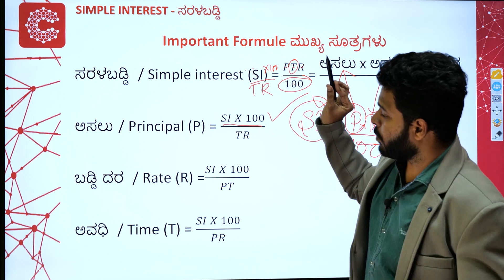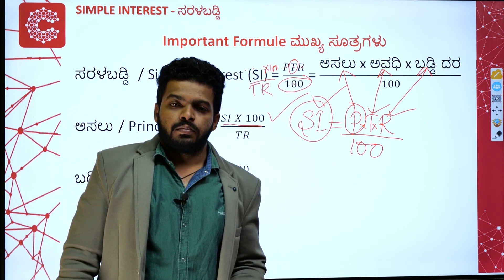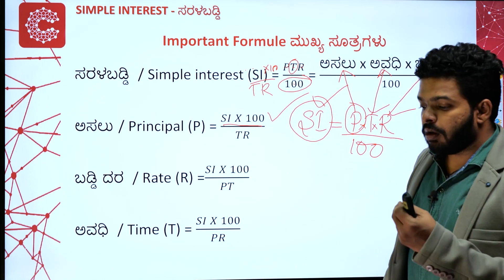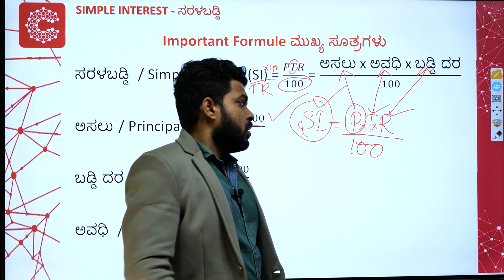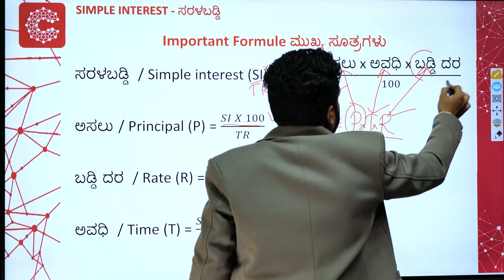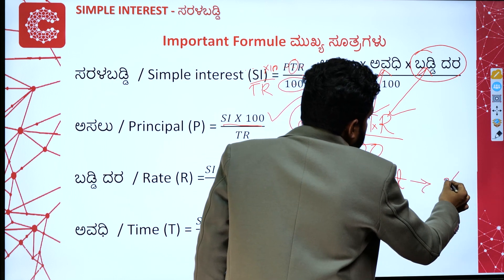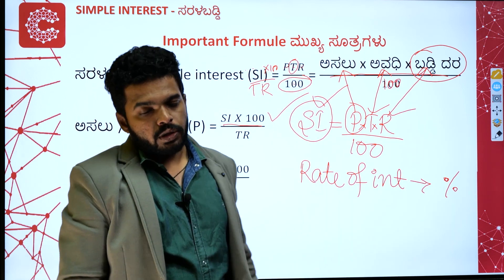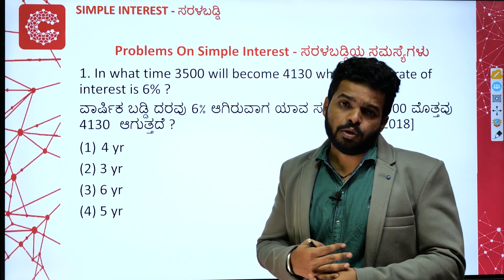One important thing to note: don't get confused about rate of interest. The rate of interest R value is always given as a percentage. So when it says 6%, the R value is 6 — do not divide by 100 again, as the division by 100 is already handled in the formula.